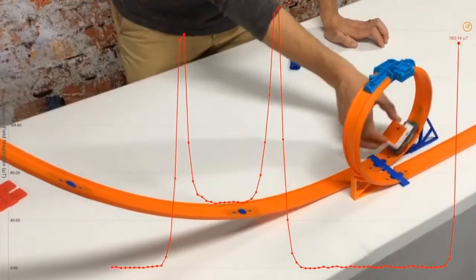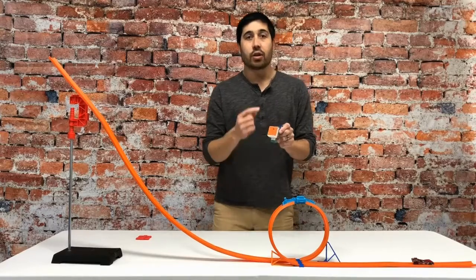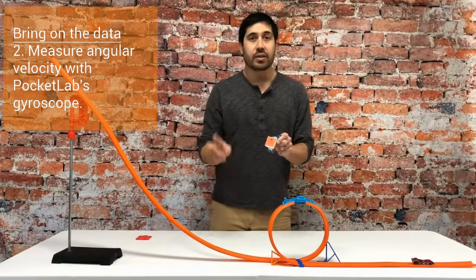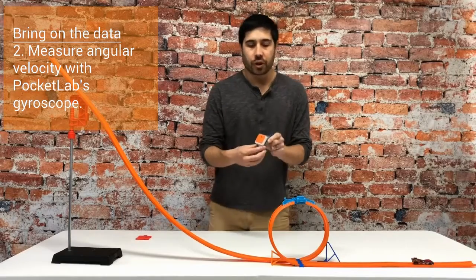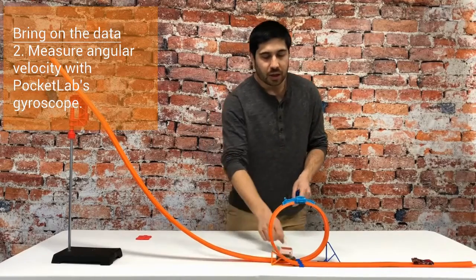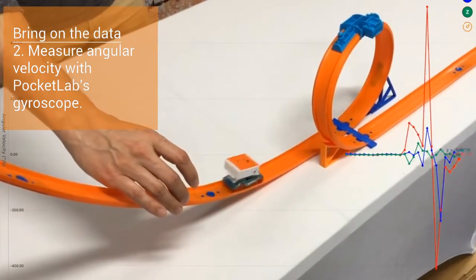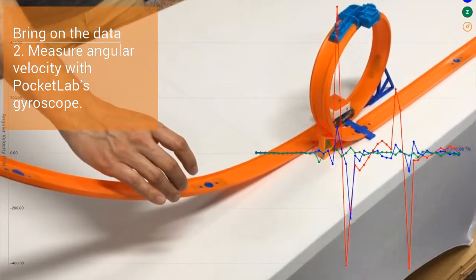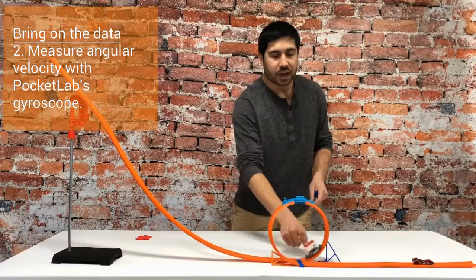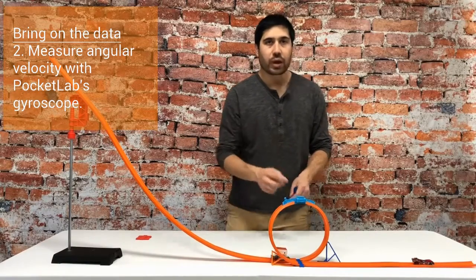So that's way one. The PocketLab has not only a magnetometer to detect the magnetic field timing gates, but also a gyroscope. And when the Hot Wheels car goes through the loop, we're able to measure the angular velocity, or the rate of change of the angular rotation as it's moving through that loop.